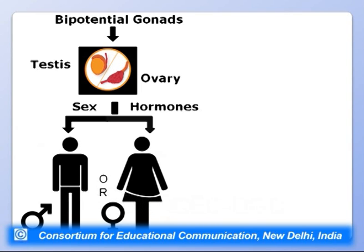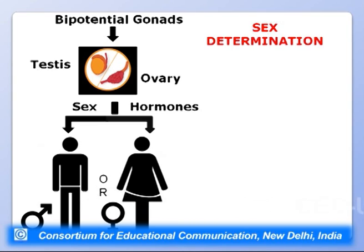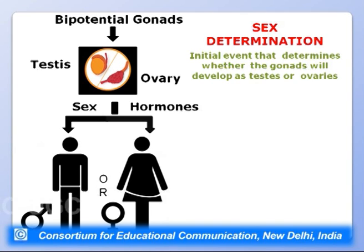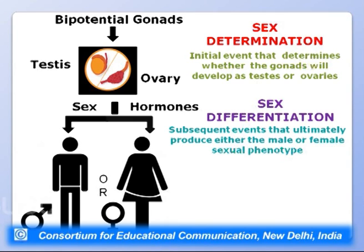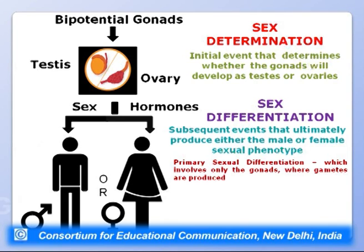Bi-potential gonads give rise to testes or ovaries, which produce sex hormones ultimately producing a male or female adult. Sex determination refers to the initial event determining whether the gonad develops as testes or ovaries. Sex differentiation refers to subsequent events producing the male or female sexual phenotype. Primary sexual differentiation involves structural differentiation of the gonads, while secondary sexual differentiation involves the overall appearance of the organism.